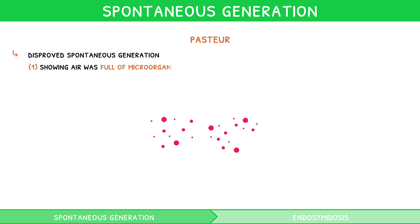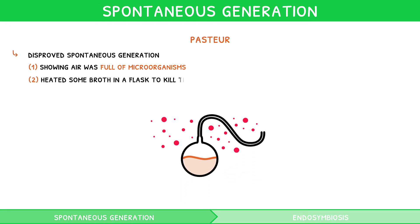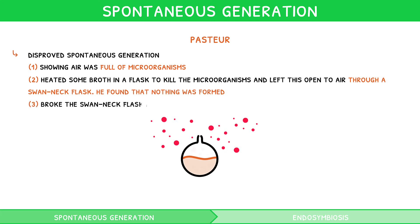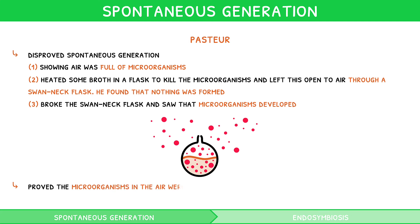Pasteur first showed that air was full of microorganisms. Then, he heated some broth in a swan-neck flask to kill the microorganisms, which prevents them from re-entering. He found that nothing was formed. He then broke the swan-neck flask and saw that microorganisms developed. In doing so, he proved the microorganisms in the air were responsible for Needham's observations, thus disproving spontaneous generation.